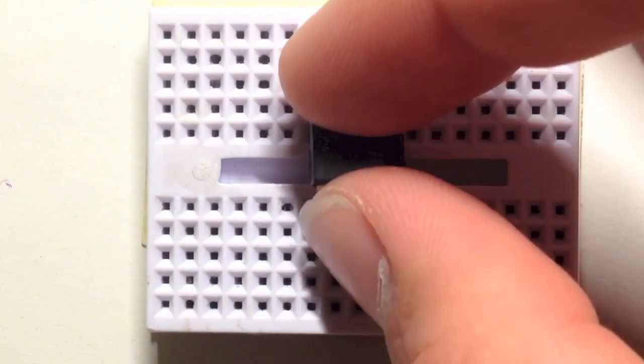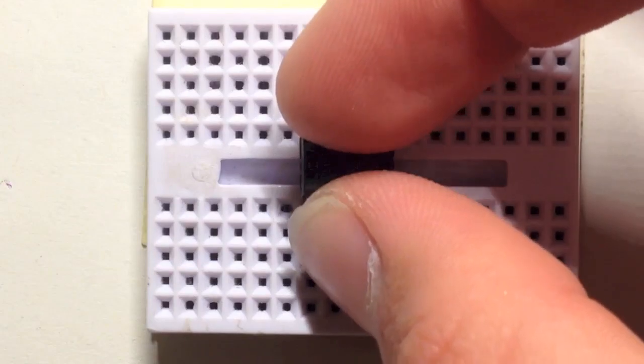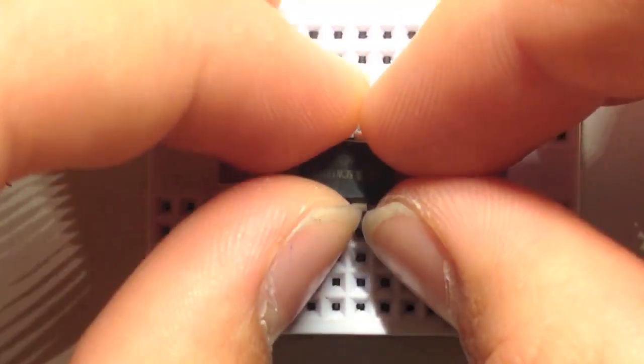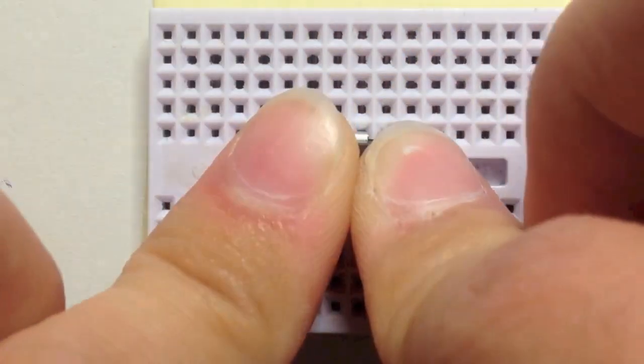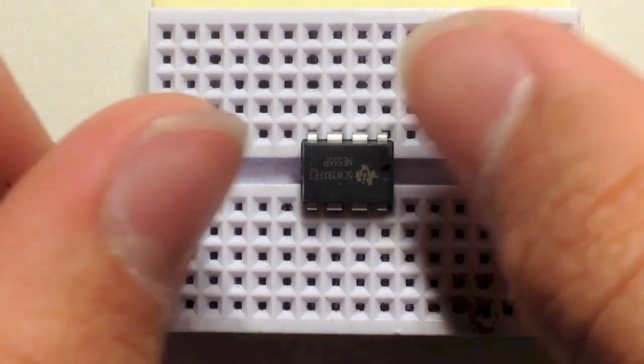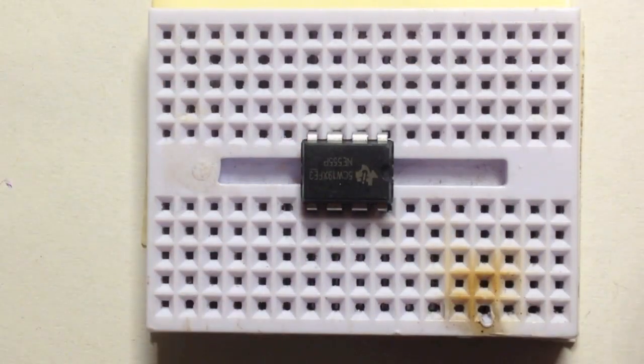Alright, now you're going to want to proceed by sticking a 555 timer right in the middle of the board. Make sure to keep the notch of the timer pointed upwards relative to the board. This will help avoid confusion and burning any timers.